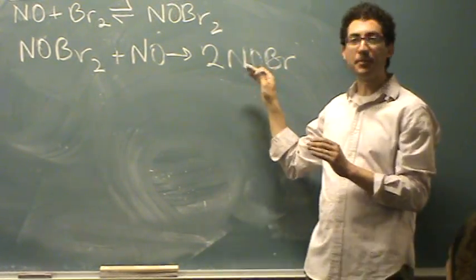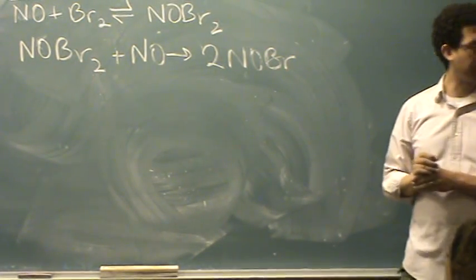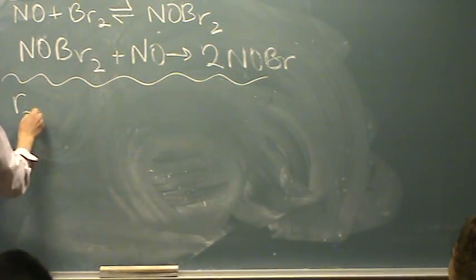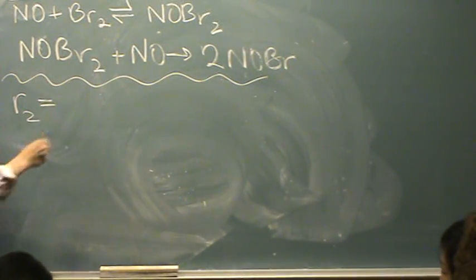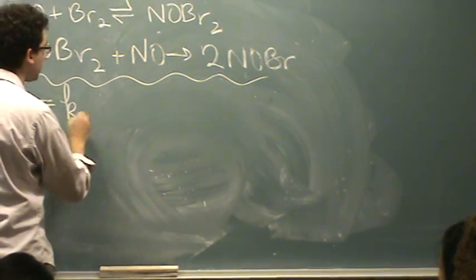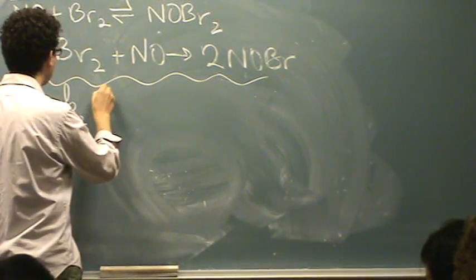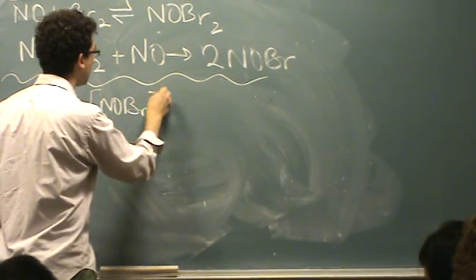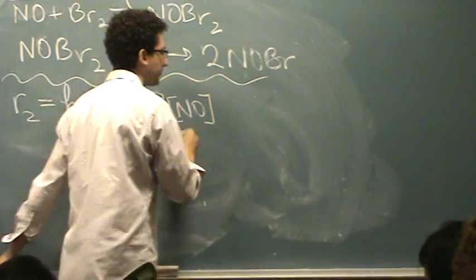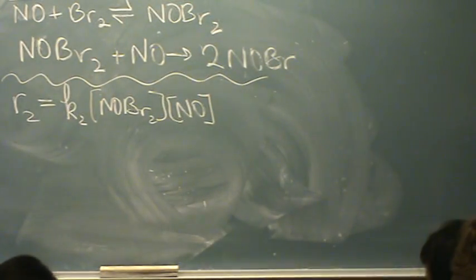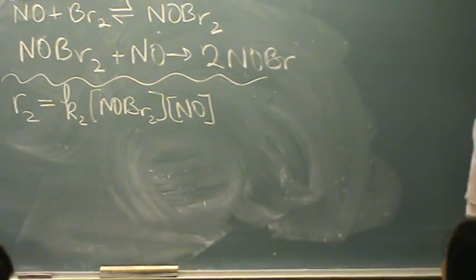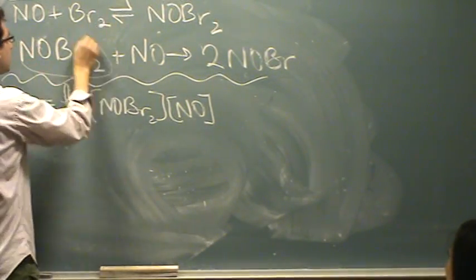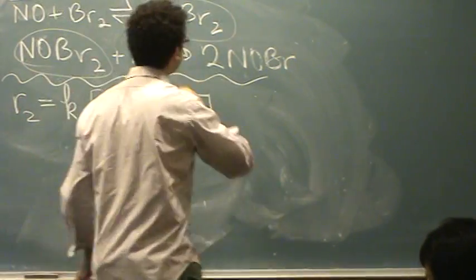So we're going to pick the second one as the rate we're going to solve for. So in this case, rate 2 will be our answer. And that's K2 times the reactants, NOBr2 times NO. There's a problem with that though. This NOBr2, you'll notice, doesn't appear in the overall reaction. That's an intermediate. I'll circle the intermediate right there.